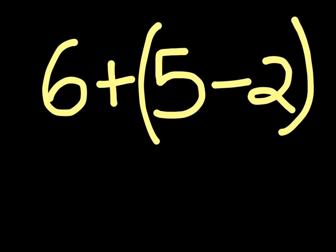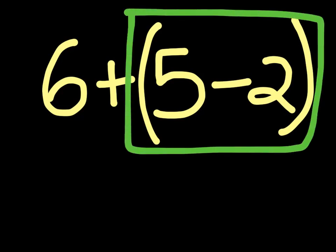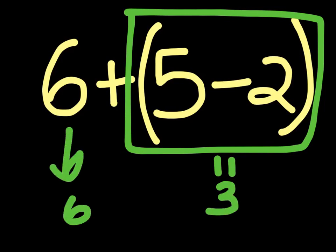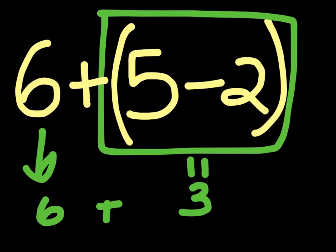So to do this, you would first solve out whatever is inside of the parentheses, meaning the 5 minus 2. And we know that 5 minus 2 is 3, so we bring down the 3, and we bring down the 6. After bringing down the 6, we would add the 2 numbers, because we have the 3, and we would get the answer to be 9.